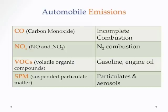Automobile tailpipes emit four kinds of pollutants. There's carbon monoxide, caused by incomplete combustion of the fuel — which is one reason alcohol or ethanol is added to gasoline, as it's an oxidizer. Then there are oxide compounds of nitrogen — nitrogen oxide and nitrogen dioxide — caused by nitrogen entering the cylinder and being oxidized during combustion. There are also volatile organic compounds (VOCs) from gasoline and engine oil, and finally particulates, or suspended particulate matter (SPM), produced during the combustion process.